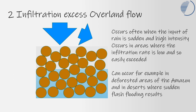The second situation is infiltration excess overland flow. This is where the rate of precipitation input greatly exceeds the rate at which the water can move into the soil. Water moving into the soil is called infiltration, and that process typically occurs at around 3 to 12 millimetres per hour.